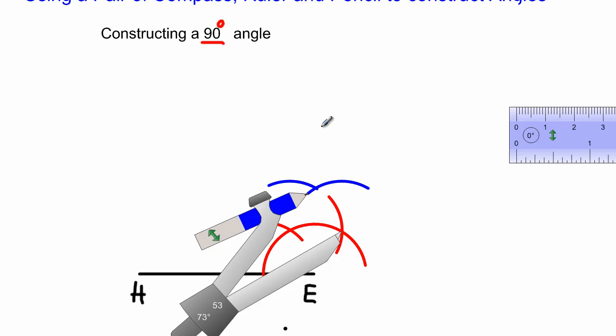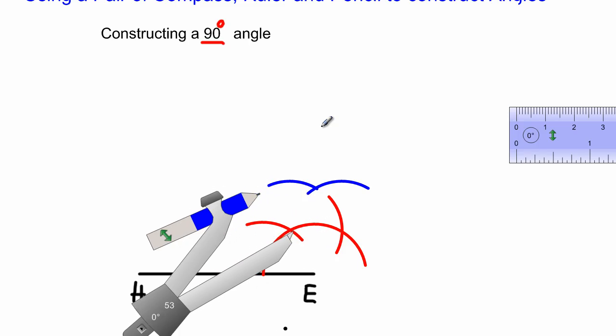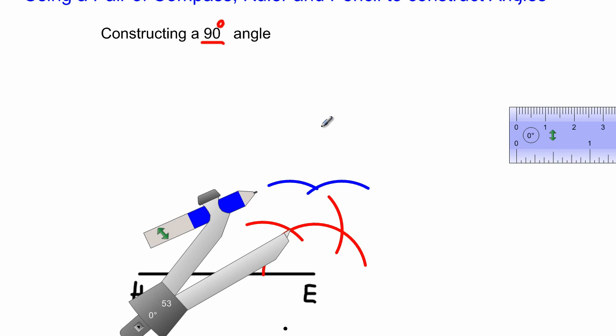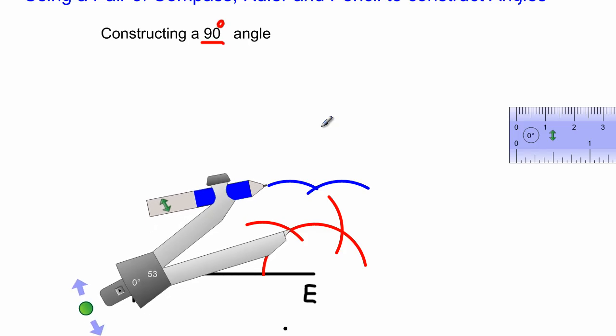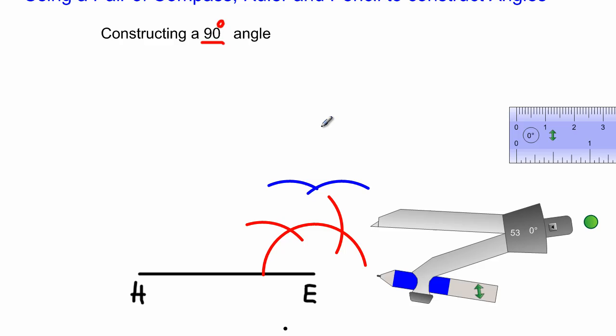Now if you notice, these two arcs have just intersected. I have an intersection right there. It's quite evident I would have an intersection right there.